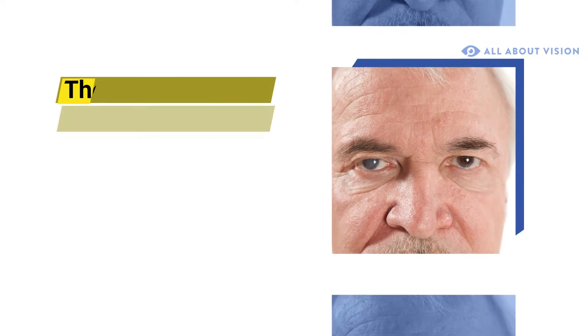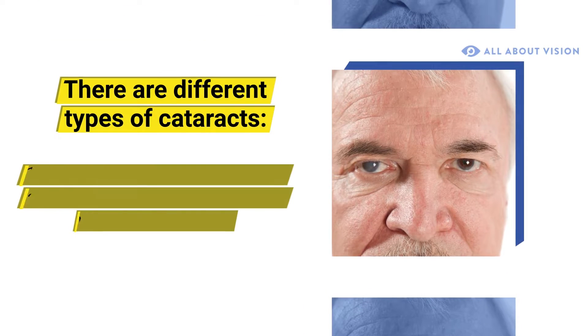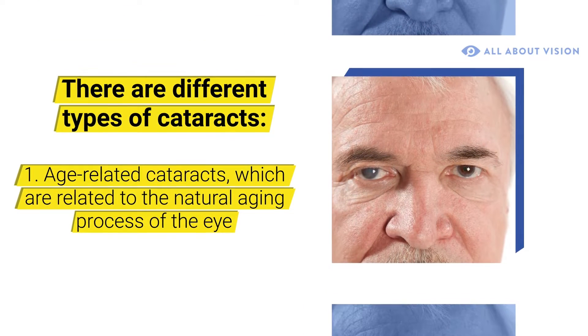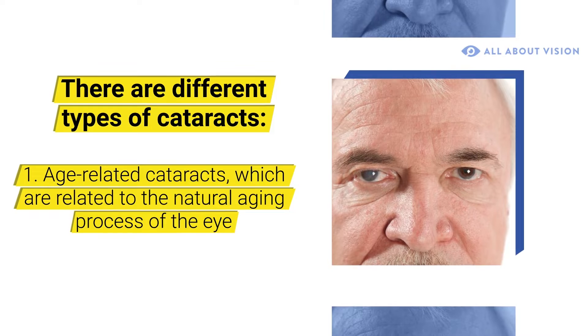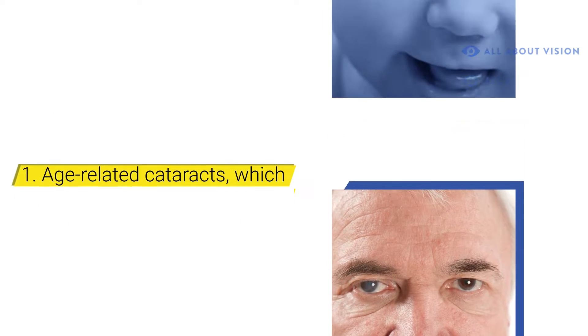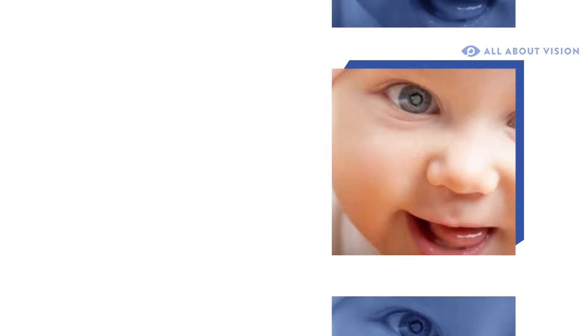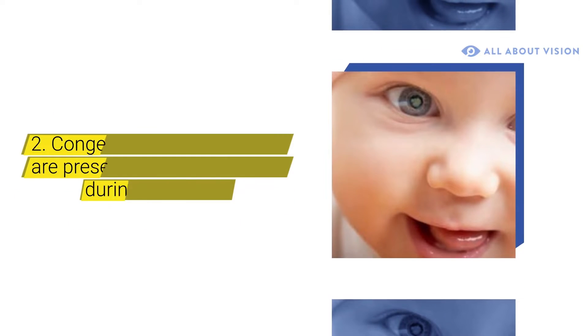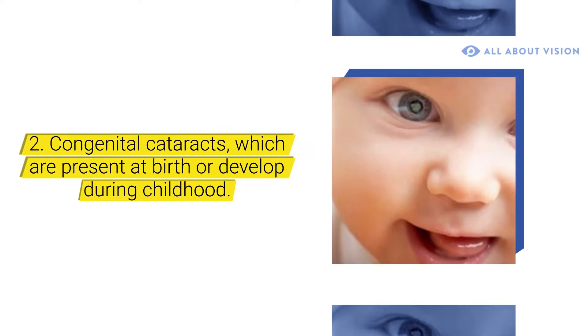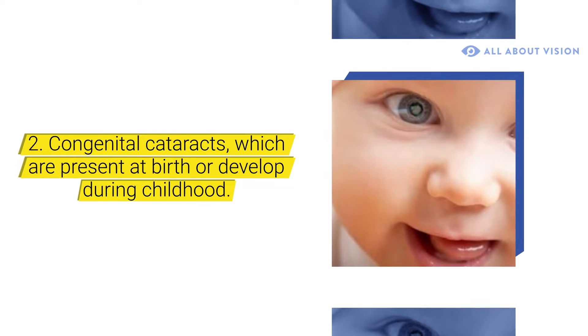There are different types of cataracts. Age-related cataracts, which are related to the natural aging process of the eye. Congenital cataracts, which are present at birth or developed during childhood.